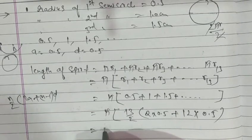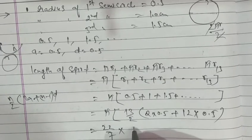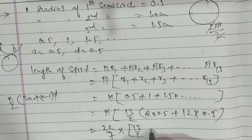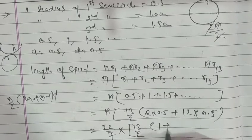π, π's value is 22 upon 7, into, it becomes 13 upon 2, 2 with 0.5, 0.5 becomes 1, plus, 12 and 0.5.